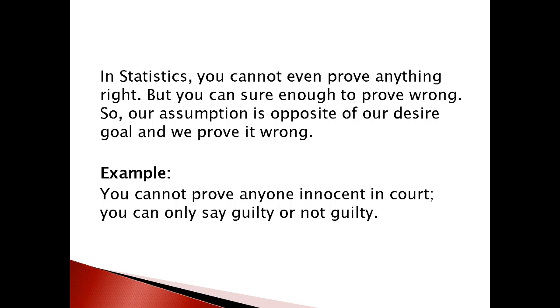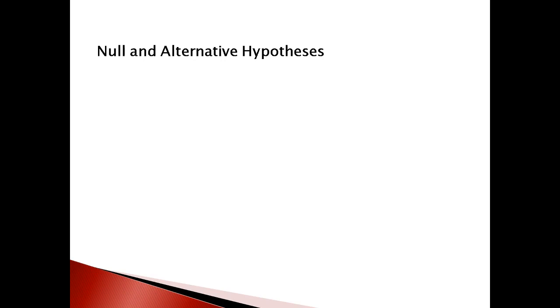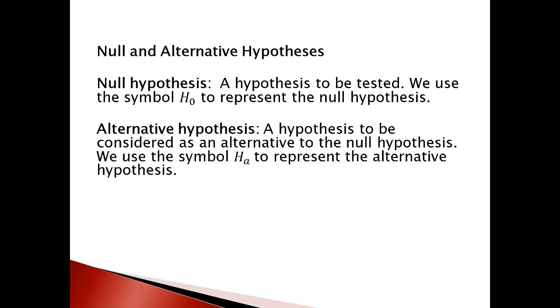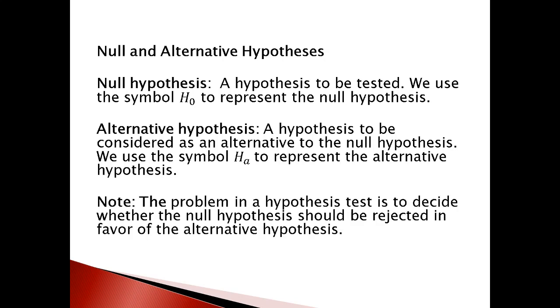This is the way we use hypothesis testing. In hypothesis testing we use two different hypotheses: the null hypothesis and the alternative hypothesis. For the null hypothesis — the hypothesis to be tested — we use the symbol H₀. For the alternative hypothesis — the hypothesis considered as an alternative to the null — we use the symbol Hₐ.